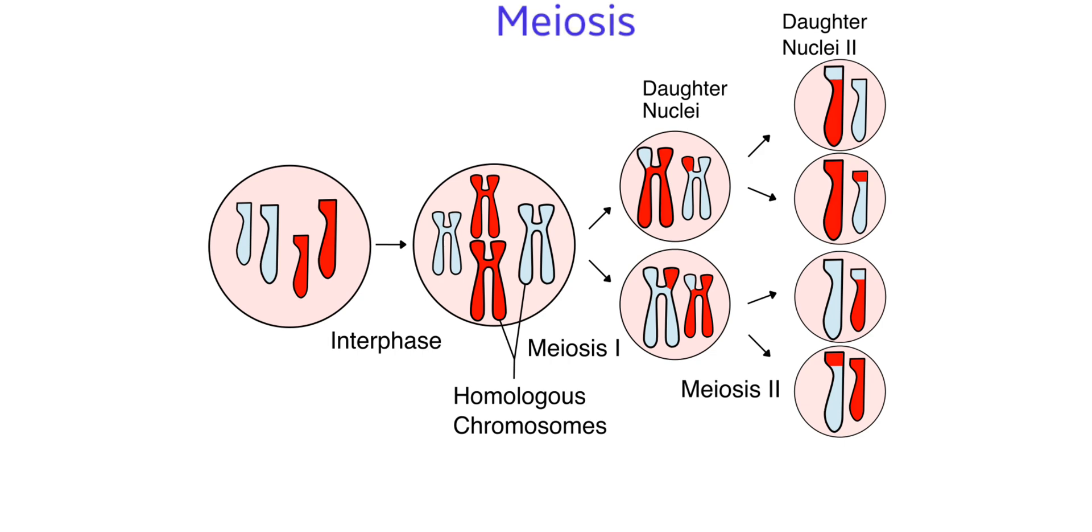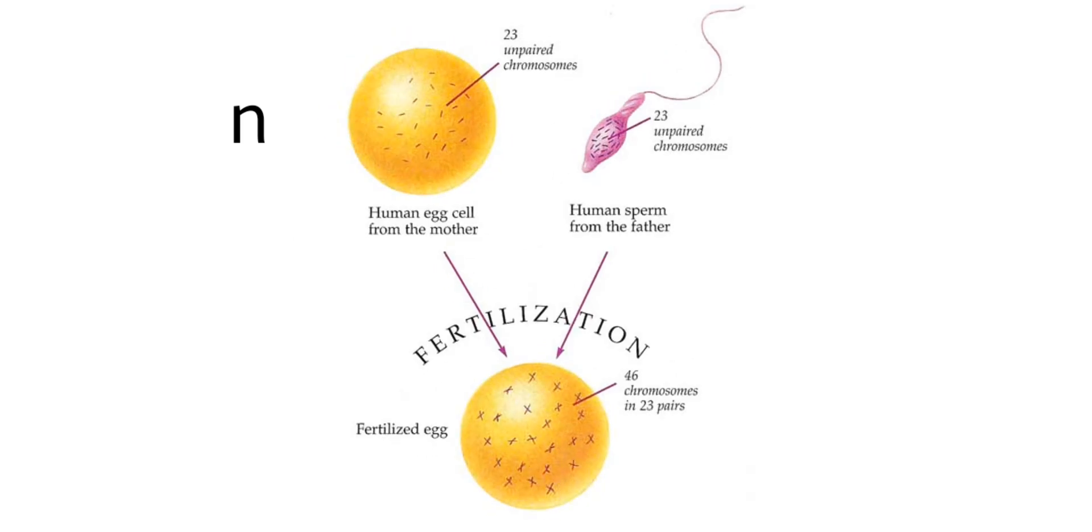Eggs and sperm possess only one set of chromosomes. When these gametes fuse to form the zygote, the chromosomes become diploid again. So the number of chromosomes of a species is maintained constant.